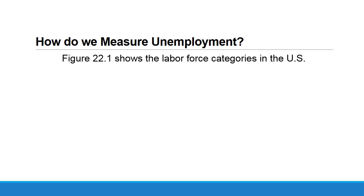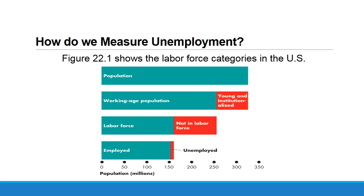Based on this figure, we can see how the labor force is categorized in the United States. The population is divided into those in the working age and those who are young and institutionalized. Those in the working age population are either included in the labor force or considered not in the labor force. Finally, those in the labor force are divided into the employed and the unemployed. We are interested in the rate of those who are unemployed.